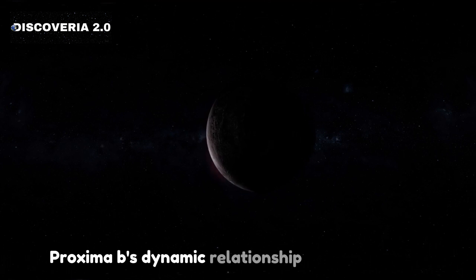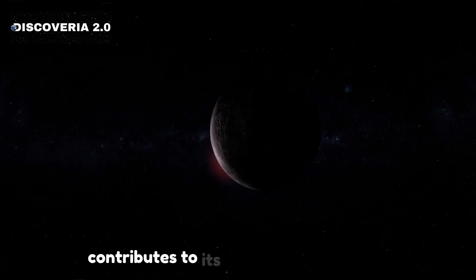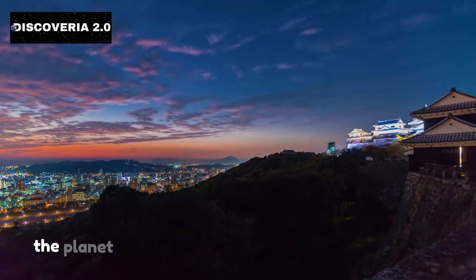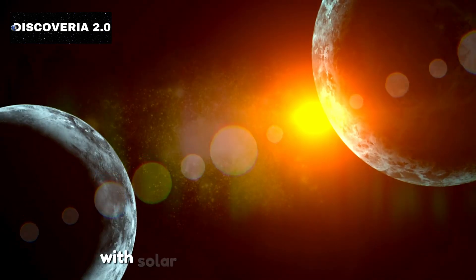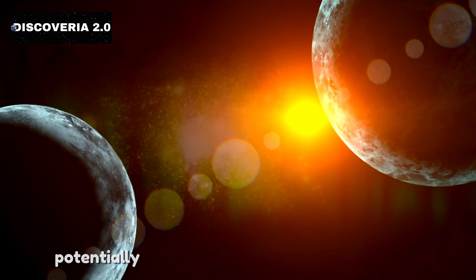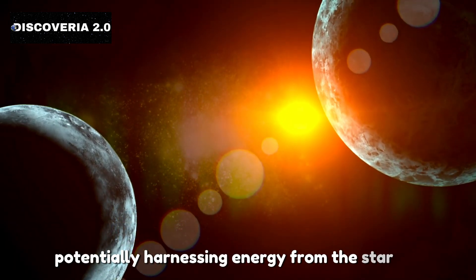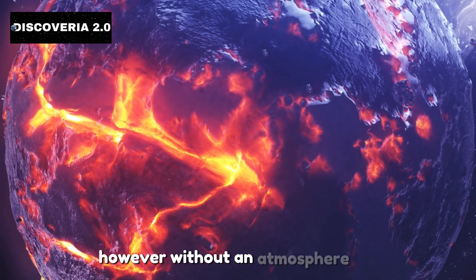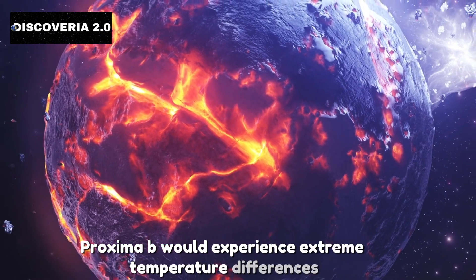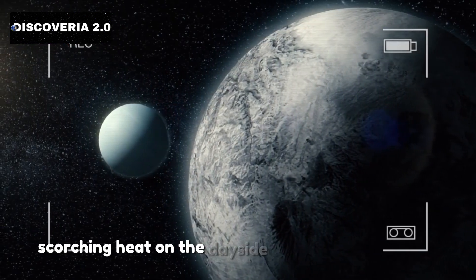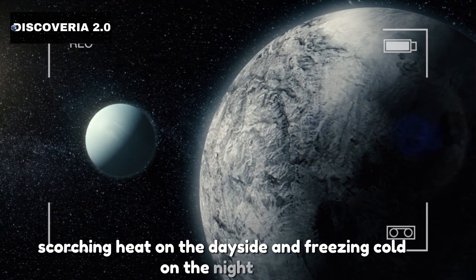Proxima b's dynamic relationship with its star contributes to its unique properties. The planet experiences day-night cycles, similar to Earth, with solar panels on the dayside potentially harnessing energy from the star. However, without an atmosphere, Proxima b would experience extreme temperature differences, scorching heat on the dayside and freezing cold on the nightside.